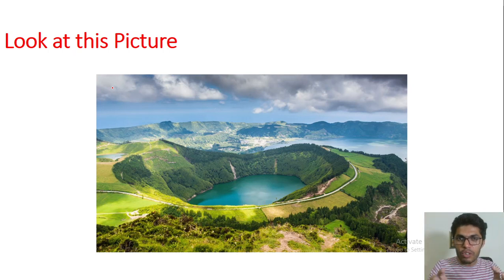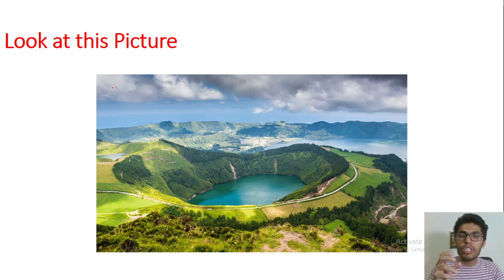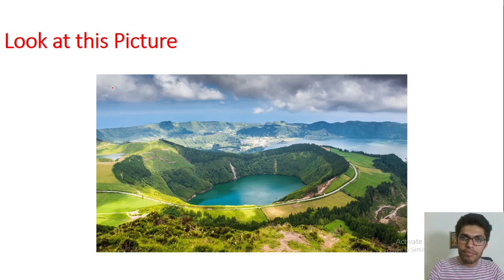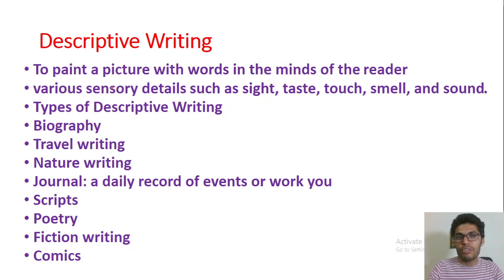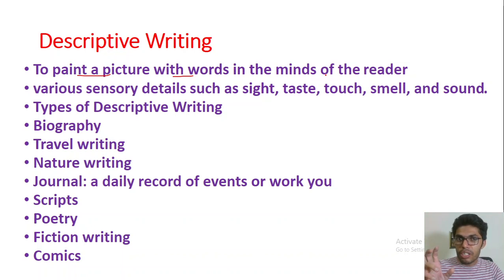Whatever you see, whatever you observe, you can simply write it down. While you are writing it down, you have to write it with this aim: if you have to explain this scene to someone without showing them the picture, how will you do that? That is related to descriptive writing. What we do in descriptive writing is try to paint a picture with words in the mind of the reader.